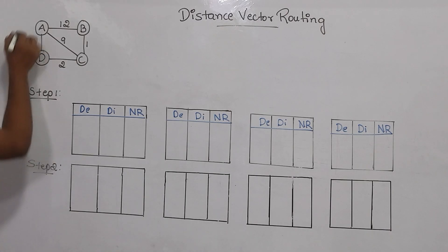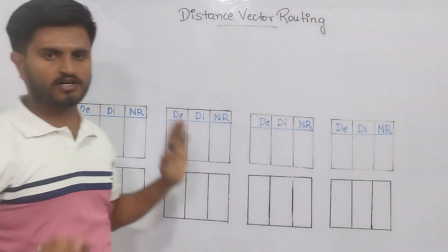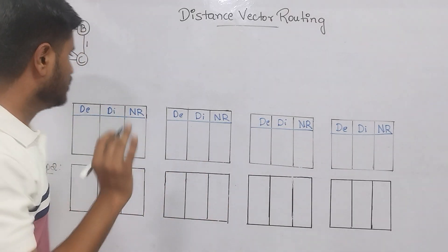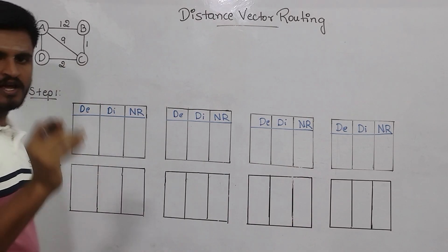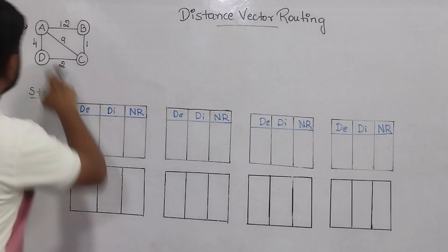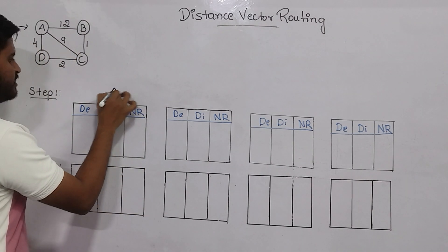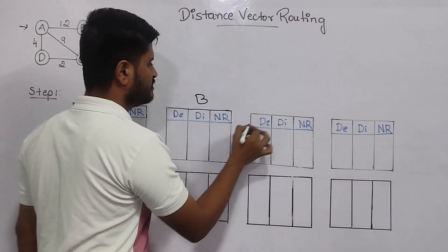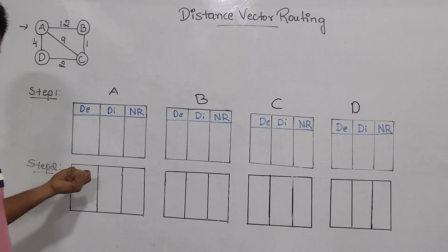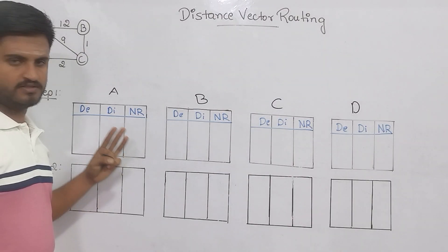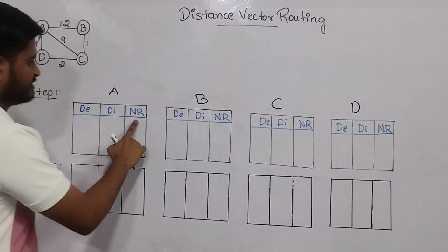Let's consider A as the source and find the shortest distance to all others. In the first step, we will be writing the routing table for each and every vertex: 1, 2, 3, 4 — you can call them vertices or routers. This is for A, this is for B, this is for C, this is for D. Every router will have three components: destination, distance, and the next router.